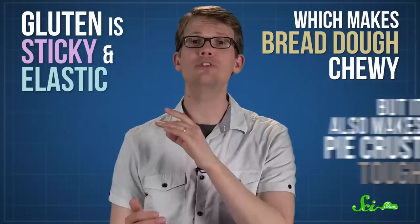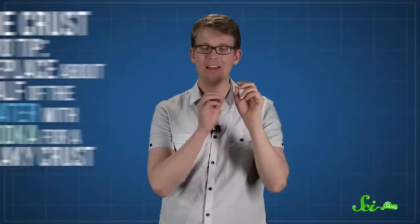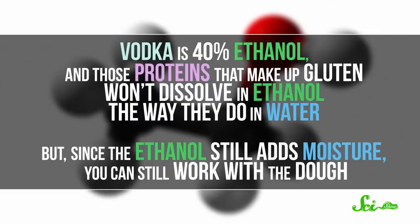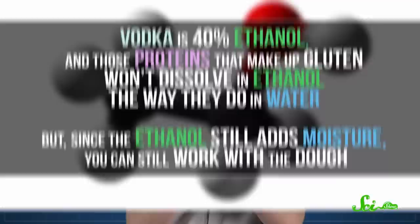But gluten also makes pie crust tough. So what you want is a pie crust dough that sticks together enough to roll out properly, but stays flaky. And replacing about half of the water with vodka turns out to be a great way to do that. Vodka is 40% ethanol, and those proteins that make up gluten won't dissolve in ethanol the way they do in water. But since the ethanol still adds moisture, you can still work the dough. Most, though not all of the alcohol will cook off in the oven, so you won't end up with a particularly boozy pie crust, just a delicious one.